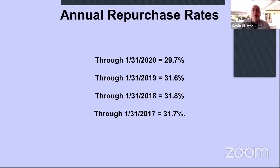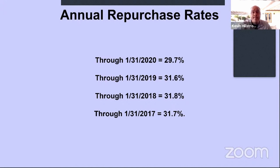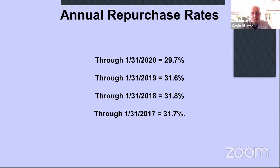I then looked at annual repurchase rates. For this business, their repurchase rates used to be about 32%. Three years ago they were 32%; now they're down to 30% — they actually dipped under 30%. So what mode is this business in? It's in acquisition mode. We can already see that this business is going to have to focus on new and reactivated customers. A 2-point drop in repurchase rates is bad, but it's not the reason this business is down 20%.